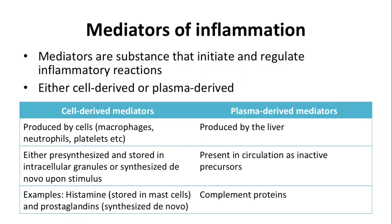What are the mediators of inflammation? Mediators are substances that initiate and regulate inflammatory reactions. They can either be cell-derived or plasma-derived. Cell-derived mediators are produced by cells such as macrophages, neutrophils, and platelets, and they are either pre-synthesized and stored in intracellular granules, or synthesized de novo upon stimulus. Plasma-derived mediators, on the other hand, are produced by the liver and are present in circulation as inactive precursors, activated upon the presence of stimulus.